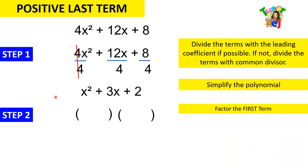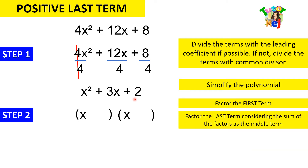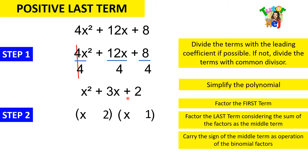For step 2, the first thing we'll do is factor the first term. We have x squared, so we factor that out as x and x. Now factor the last term considering the sum of the factors as the middle term. The factors of 2 are 2 and 1, and when we add them up, we get 3 — which matches the middle term. We carry the sign of the middle term as the operation of the binomial factors. Since we have a positive middle term, we have plus operations inside our binomial factors.